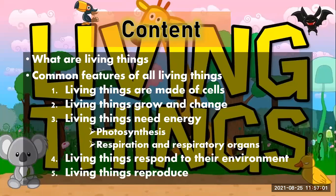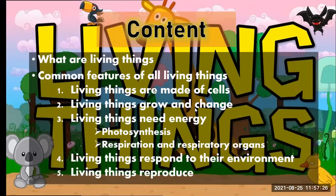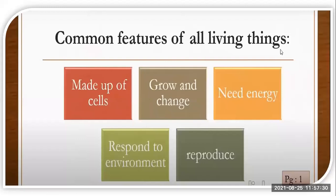We started this chapter and saw the table of contents, in which we learned about living things and their common features — features which are common in all living things, not just in plants or animals or birds, but in every living creature. Here come the five common features of living things: living things are made up of cells, they grow and change, they need energy, they respond to their environment, and they reproduce. We discussed these in detail in our previous classes. Today we are going to continue from the fourth feature, which is responding to the environment.